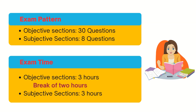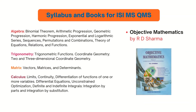In the objective section, questions are MCQ with single correct options. If you answer correctly you get one mark positive; if you answer incorrectly you get zero marks — so there is no negative marking for wrong answers.